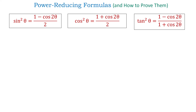Hello. The power-reducing formulas are: sin squared of theta equals 1 minus cosine of 2 theta over 2; cosine squared of theta is 1 plus cosine of 2 theta over 2; and tangent squared of theta is 1 minus cosine of 2 theta over 1 plus cosine of 2 theta.